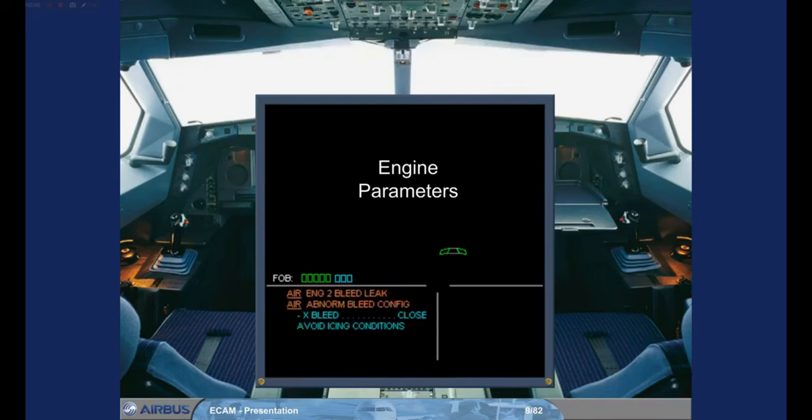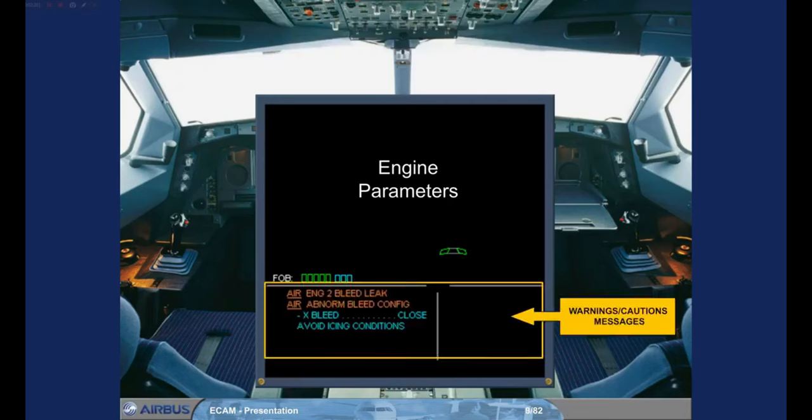If failures occur, warning or caution messages are displayed in place of the memos. In the example shown, there is an amber caution message with a series of blue action items. These action items are your electronic checklist to respond to the particular abnormal situation.